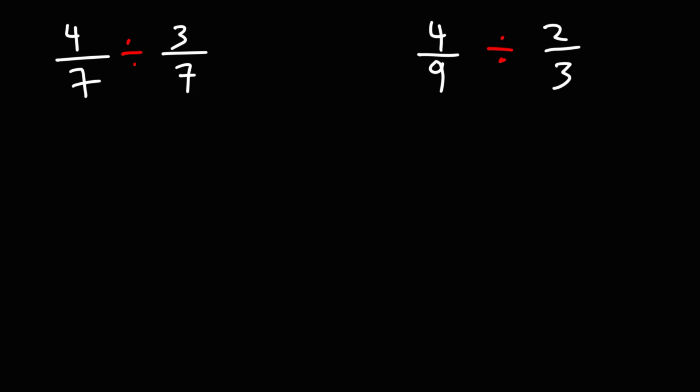Let's talk about how we can divide a fraction by another fraction. So we have 4 over 7 divided by 3 over 7. What we need to use is the phrase keep change flip.